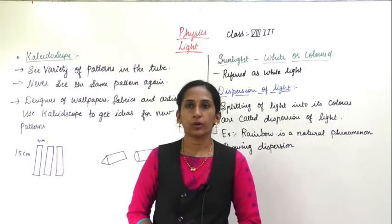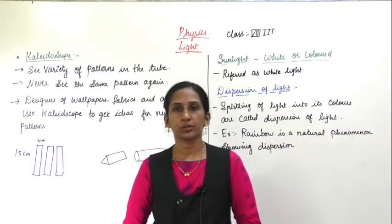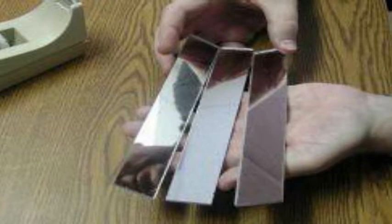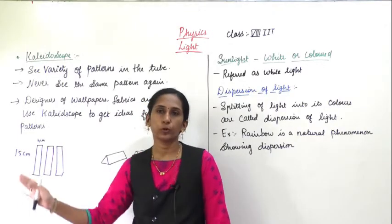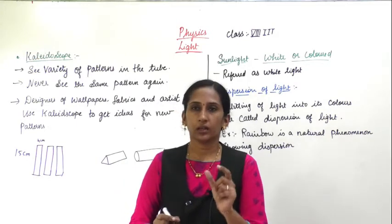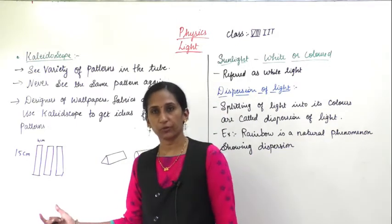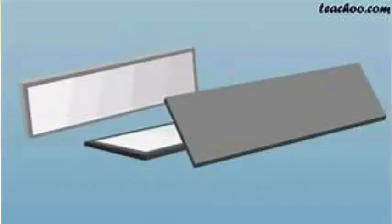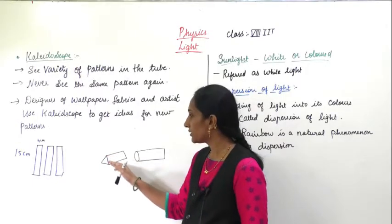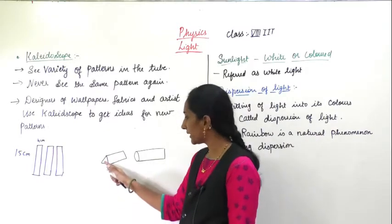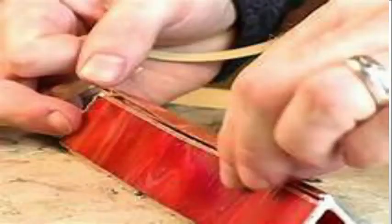For preparing the kaleidoscope, you should take three mirrors having a length of 15 cm and width of 4 cm. Like this, three strips of mirrors you will take and you will keep them such that they look like a prism shape.